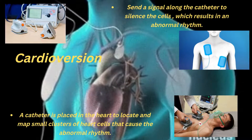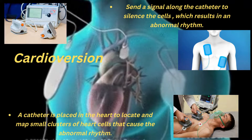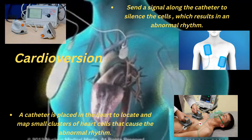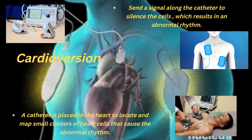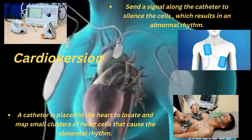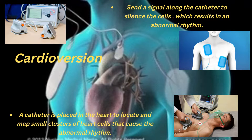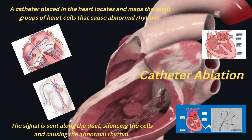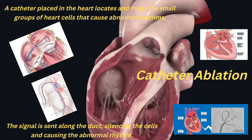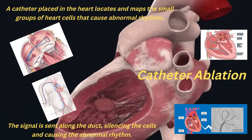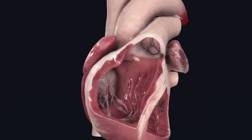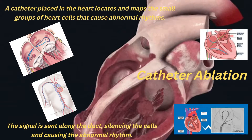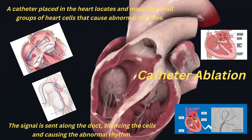Another procedure is cardioversion: a catheter is placed in the heart to locate and map small clusters of heart cells that cause the abnormal rhythm, then a signal is sent along the catheter to silence those cells, which resolves the abnormal rhythms. Similarly, catheter ablation involves placing a catheter in the heart to locate and map the small groups of heart cells that cause abnormal rhythms; a signal is sent along the duct, silencing the cells and stopping the abnormal rhythm.